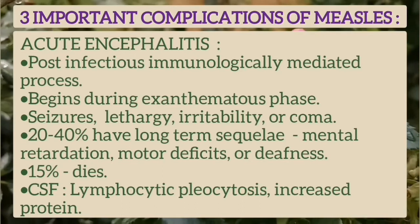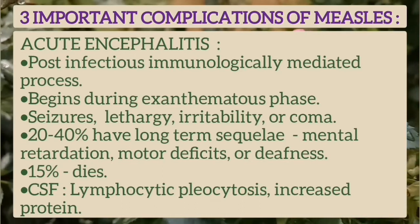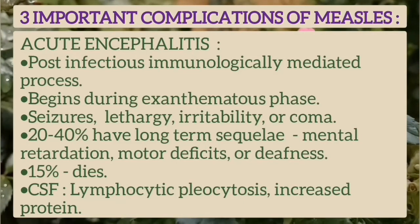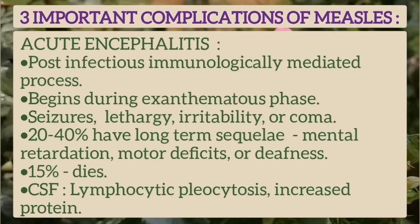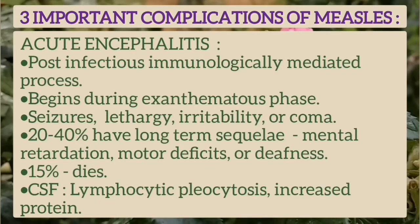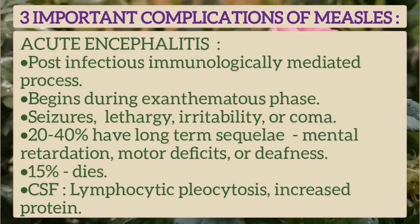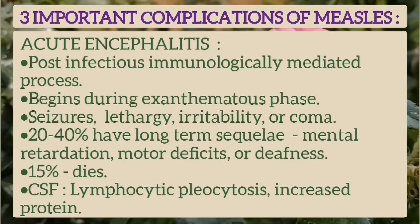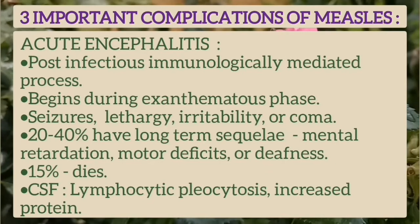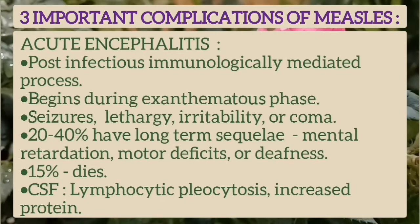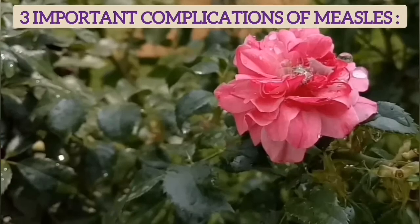Three important neurological complications: First is acute encephalitis, a post-infectious immunologically mediated process that begins during the exanthematous phase. There are seizures, lethargy, irritability, or coma. 20 to 40% have long-term sequelae like mental retardation, motor deficit, or deafness, and 15% die. CSF shows lymphocytic pleocytosis and increased protein content.